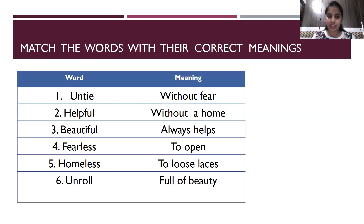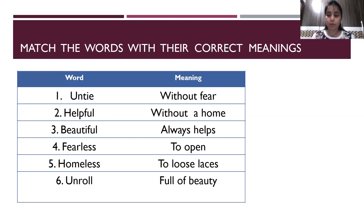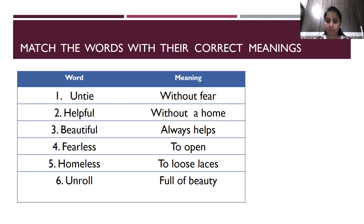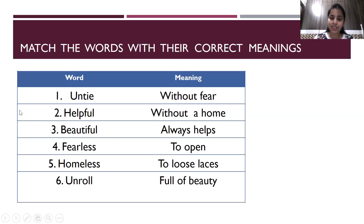The next task is to match the words with their correct meaning. We learned that prefix and suffix attach some meaning to the word. For example, the meaning of the prefix 'un' is 'not.' So when we add 'un' before a word, it becomes the opposite of the root word. For example, 'tie' means to tie something, and 'untie' means to open something — so the meaning of 'untie' is to open.